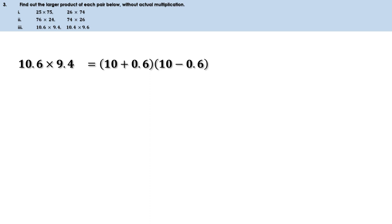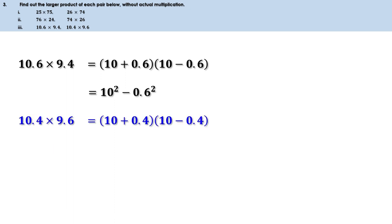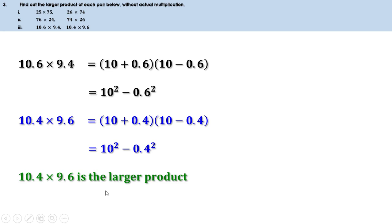Third pair: 10.6 × 9.4 vs 10.4 × 9.6. 10.6 × 9.4 = (10 + 0.6)(10 - 0.6) = 10² - 0.6². And 10.4 × 9.6 = (10 + 0.4)(10 - 0.4) = 10² - 0.4². Since 0.4 is less than 0.6, 0.4² is less than 0.6², so a smaller quantity is subtracted. Therefore 10.4 × 9.6 is the larger product.